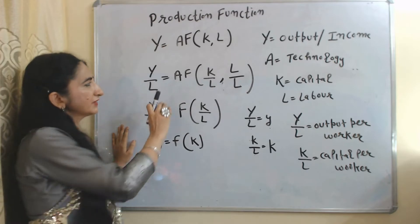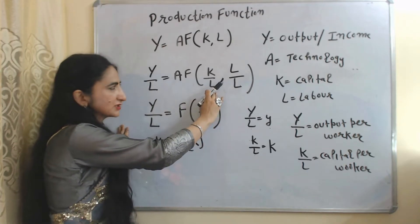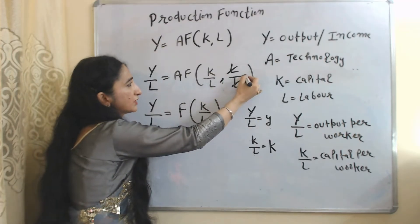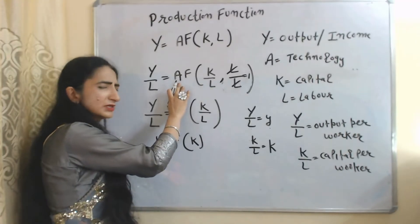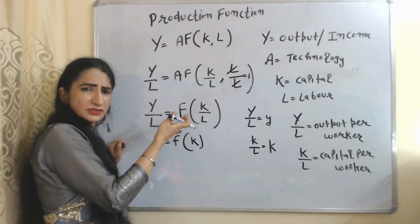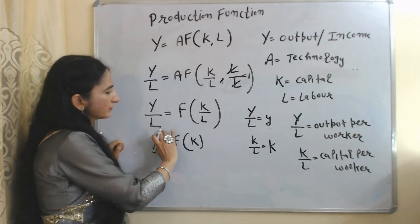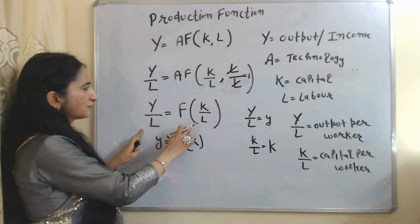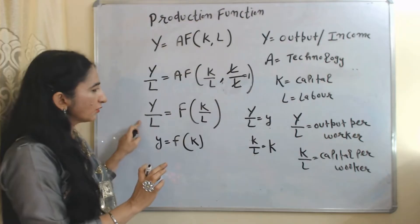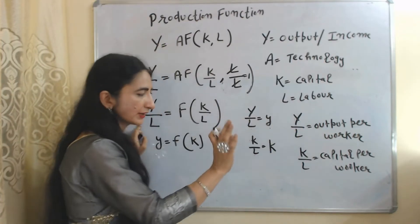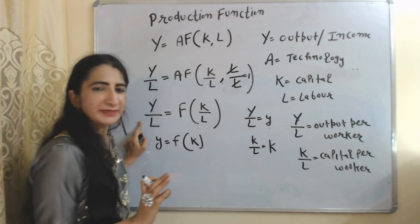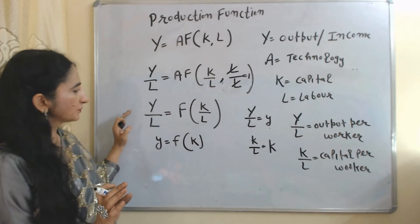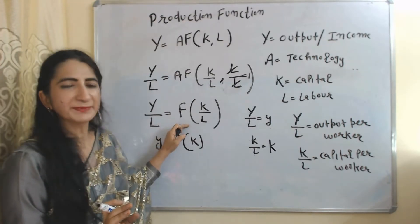In order to know the productivity of labor, we divide both sides of this equation by L. After dividing, L and L cancel with each other and become equal to 1. Since technology is constant, our equation becomes: Y/L = f(K/L). Y/L is output per worker and K/L is capital per worker. According to this equation, output per worker is a function of capital per worker.